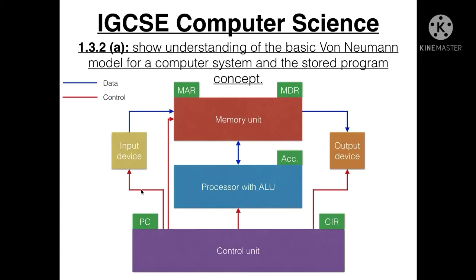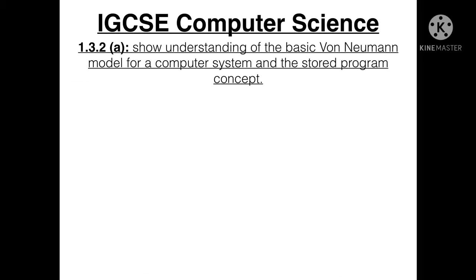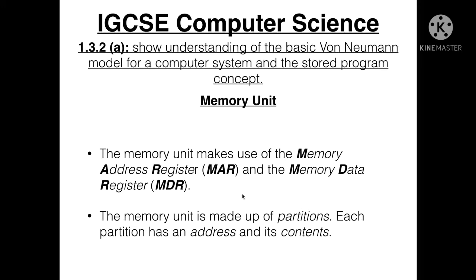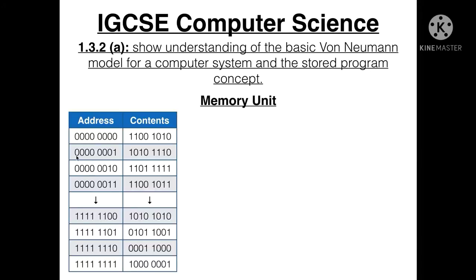Keep in mind that the registers shown in the diagram don't necessarily illustrate their exact physical location — it's just to illustrate which parts use registers. The memory unit makes use of the MAR (Memory Address Register) and MDR (Memory Data Register). The memory unit is made up of partitions, and each partition has an address and contents. For example, address 00000000 might contain 11001010.